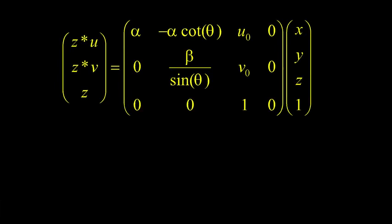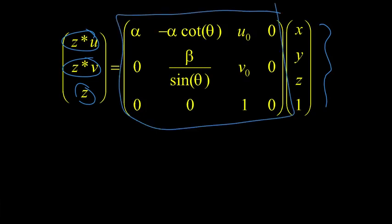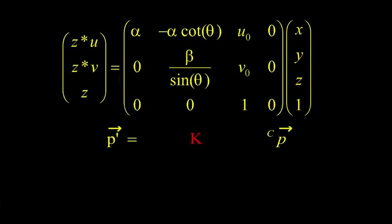So now we can express the whole thing in homogeneous coordinates. Notice that here we have z times u, z times v, z. So later when we convert back from homogeneous to non-homogeneous, we divide by z, and we get what we want. We have the x, y, z, one over here, and we have this matrix in the middle. So we can rewrite this as a very simple equation.